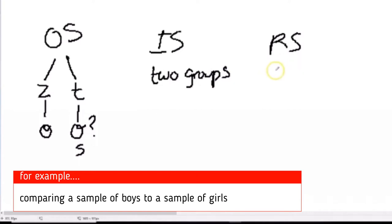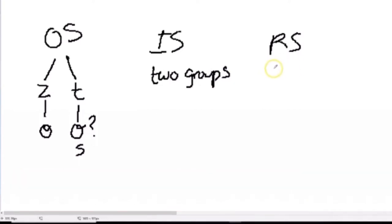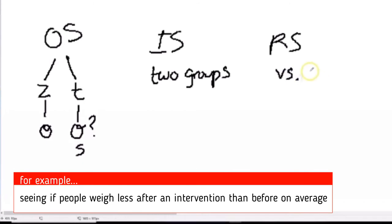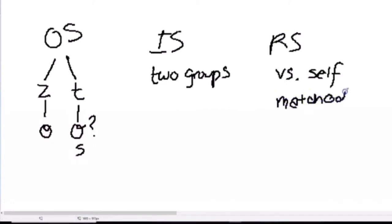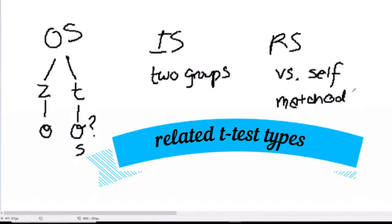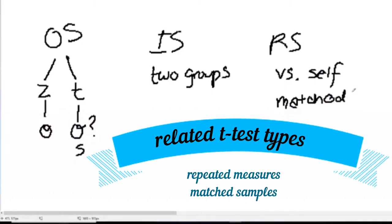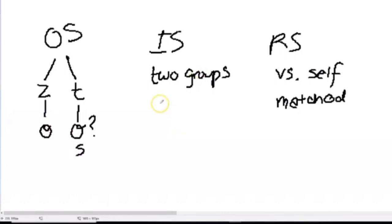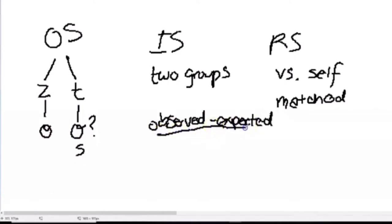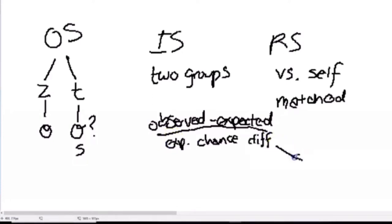The related samples t-test is comparing people normally to themselves — for example, to see if you are different at the beginning and the end of class. Sometimes we use what's called matched samples in the related samples t-test. These are the three types of tests we're going to look at. The universal test is really observed against an expected value, hedged over a standard error — the expected chance difference measured by a standard error — a concept we learned in Chapter 7.